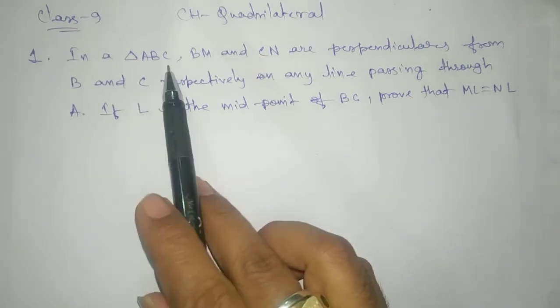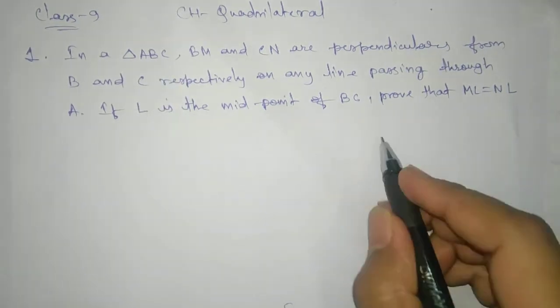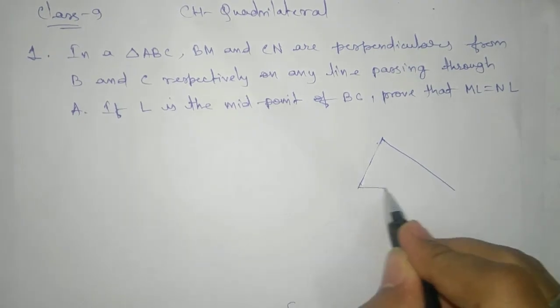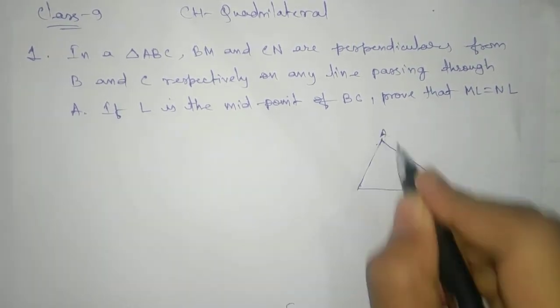So let's see here. First they are saying here ABC is a triangle, so we will draw a triangle. Any type of triangle, let's take here.